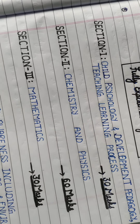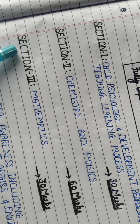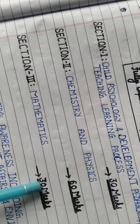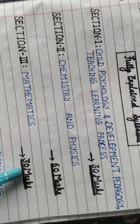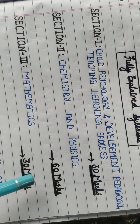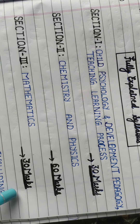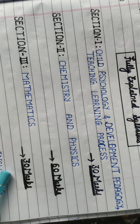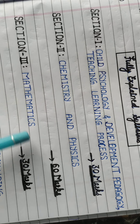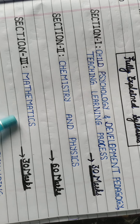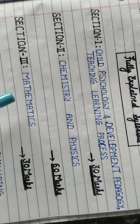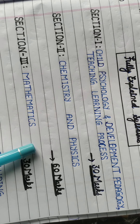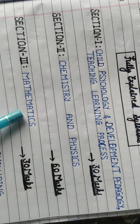The third section is Mathematics. This section also carries 30 marks with 30 total questions, each worth 1 mark. Previously, questions were asked up to the 10th standard level.